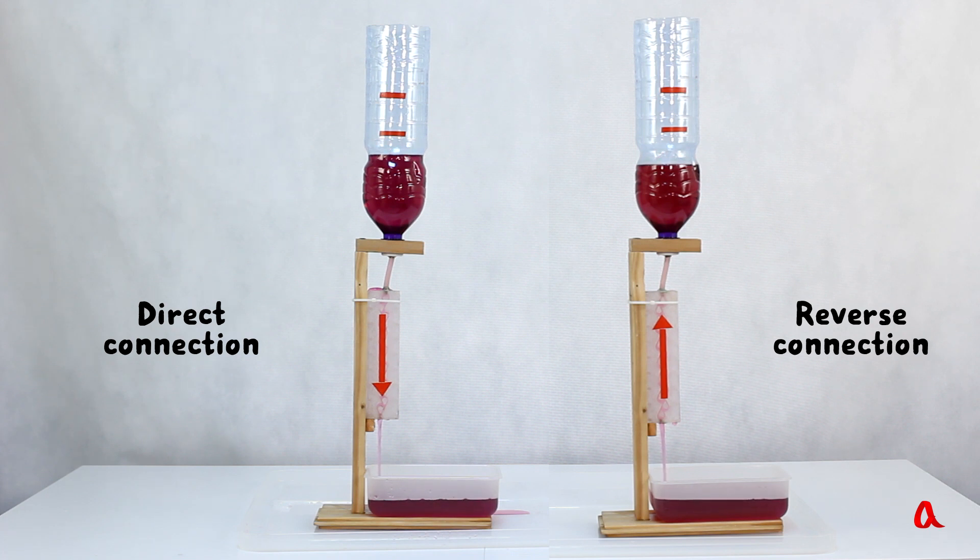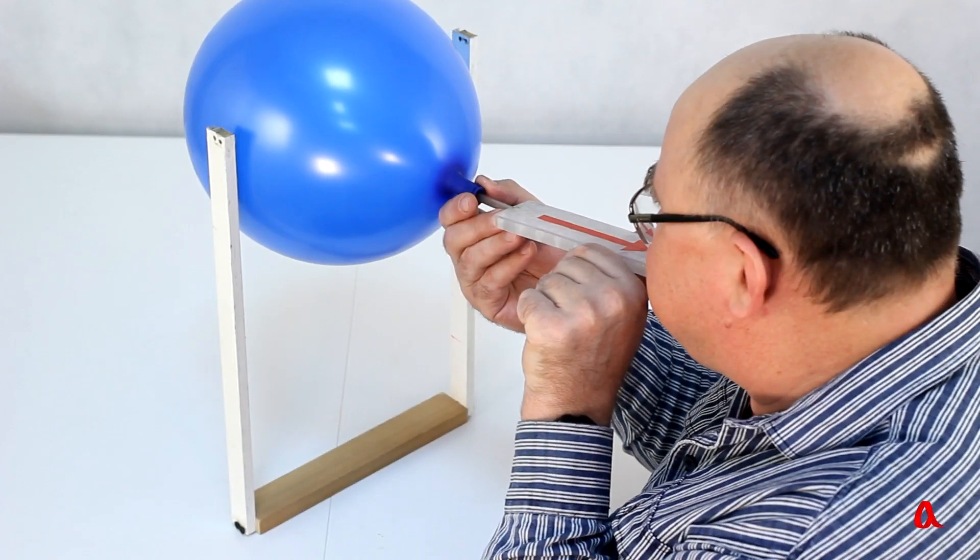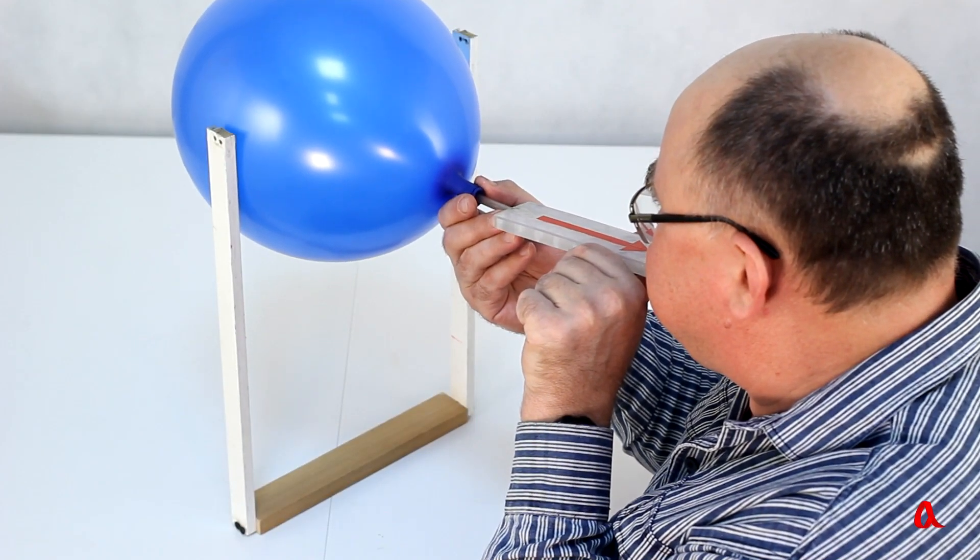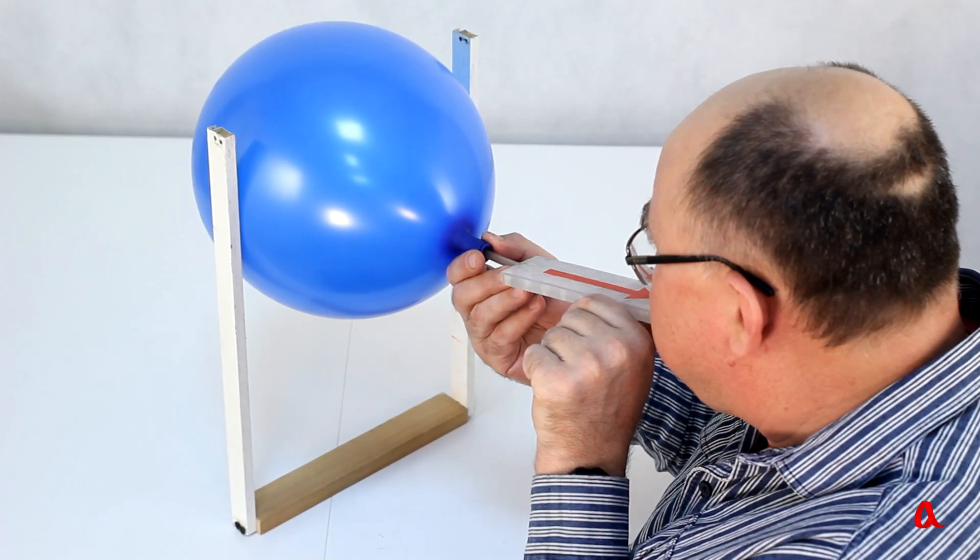Perhaps the valve will work properly with air in it instead of water. Let's see how it lets through the air which comes out of a balloon. For the balloon to have the same volume we shall control its size with the help of a last frame.